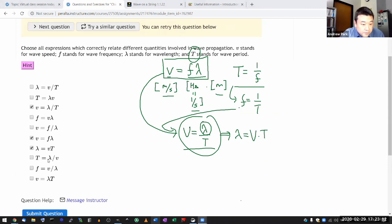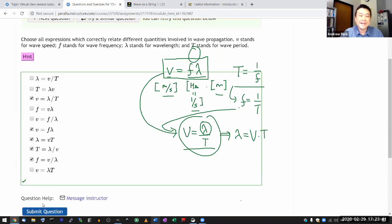T is equal to lambda over v. Oh yeah, this is actually the same as that. You can imagine solving for v here. So if v goes on the other side, on the numerator, T comes on the denominator here. So they are actually equivalent to each other. Okay, and this one, I think if you solve it for v, that will be equal to f times lambda. And finally, this one, yeah, that's not it. Okay, so I selected five, should be correct. Yeah.